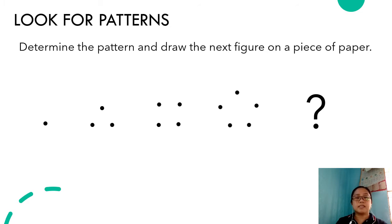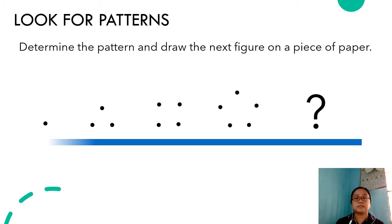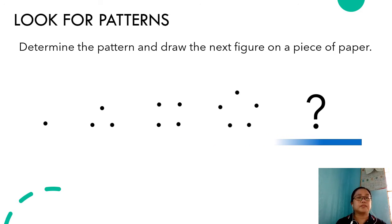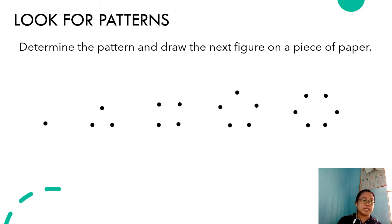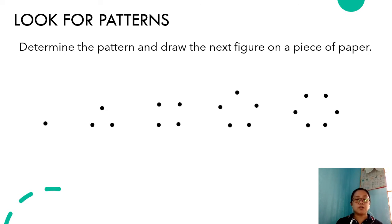Here we have dots arranged in a pattern. Can you tell what the next figure is? I will give you 10 seconds. If you notice, the dots starting from the second figure resemble those of the corners of polygons — from a triangle to a quadrilateral, then to a pentagon. Using this observation, the next figure must resemble the corners of a six-sided polygon, or what we call a hexagon.